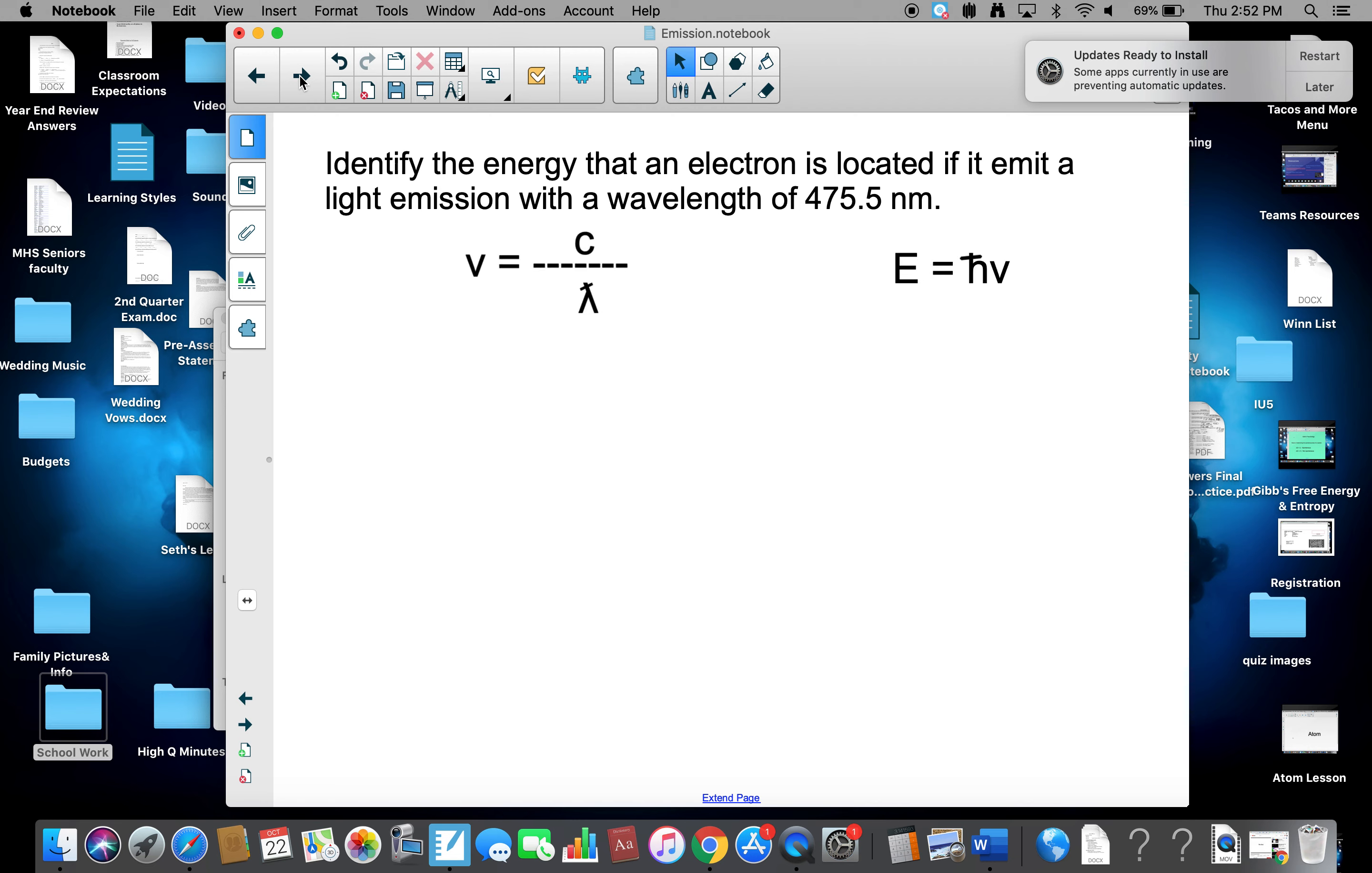So again, we have two equations. Nu equals C over lambda, and E equals h nu. So let's start with E. We don't know what E is.